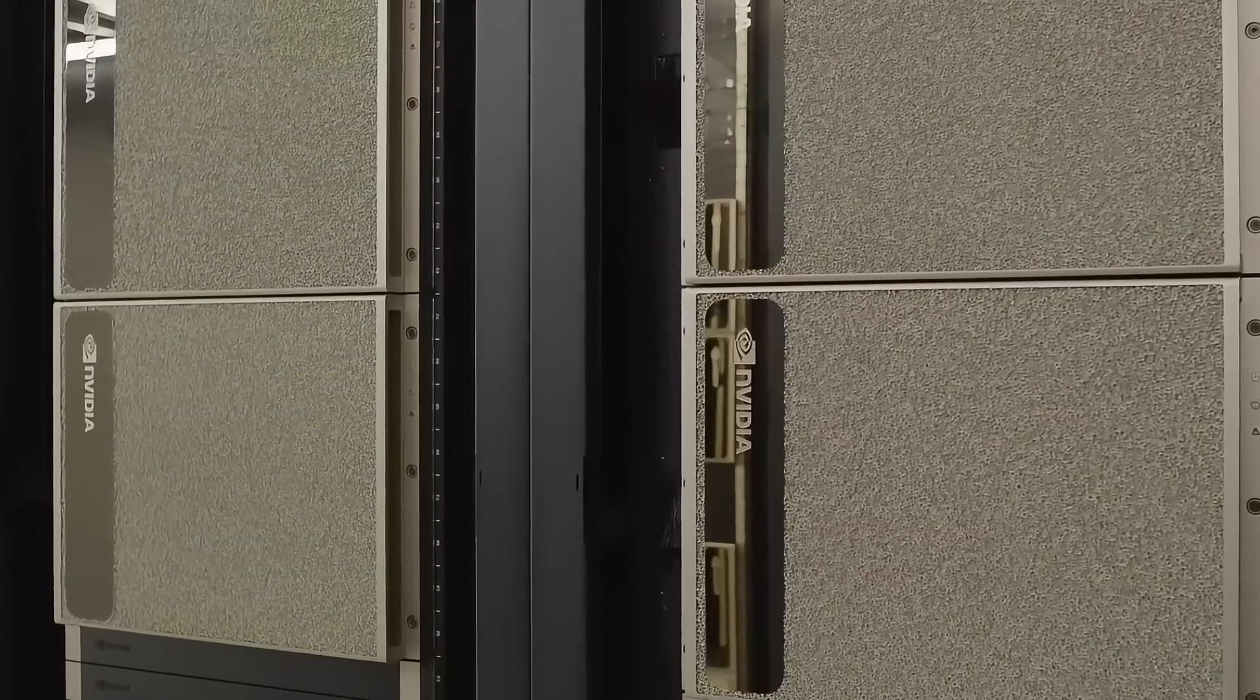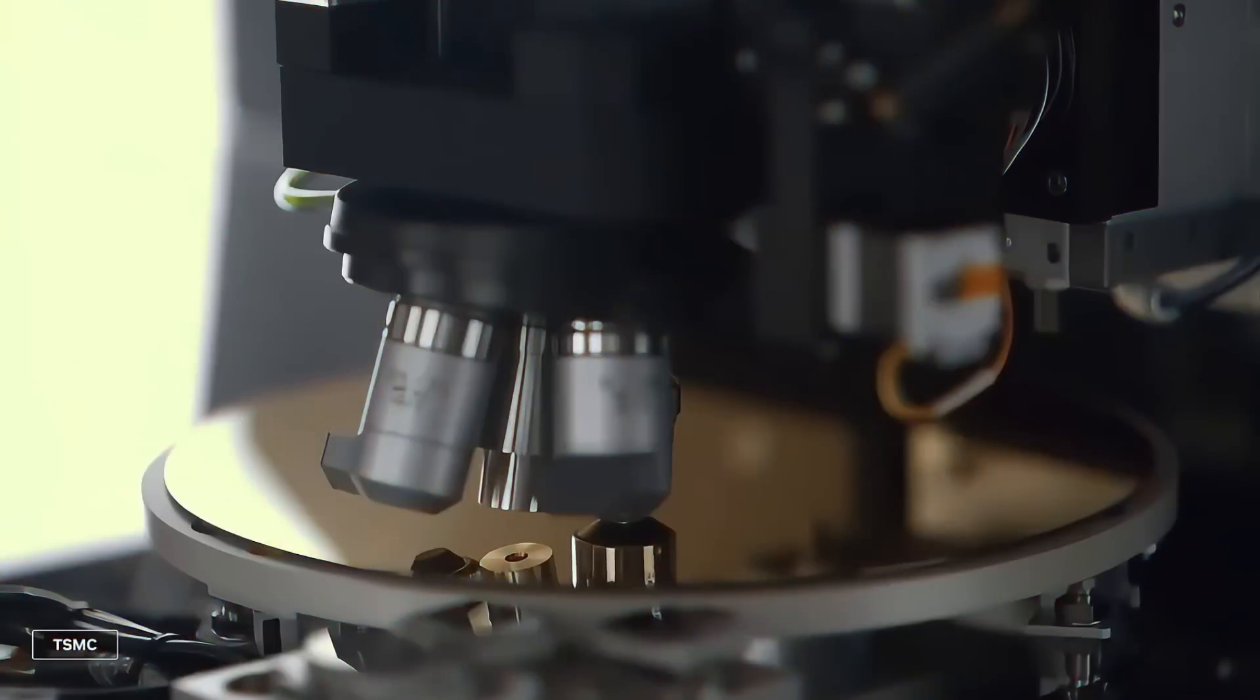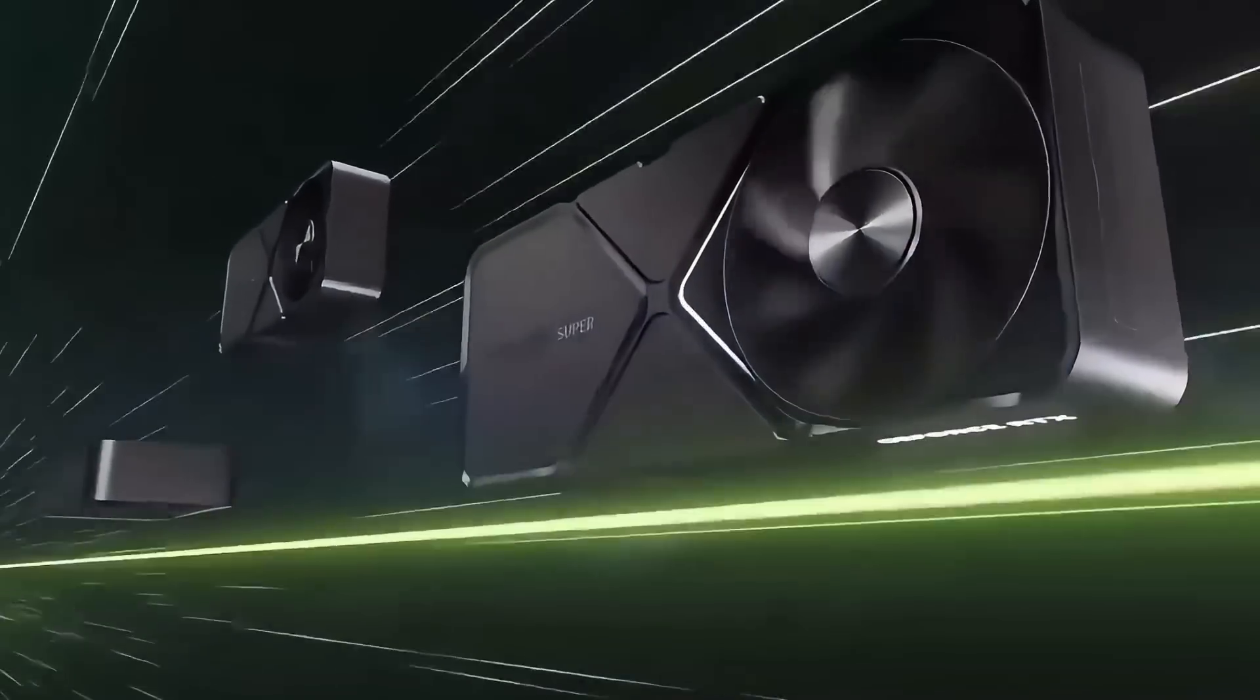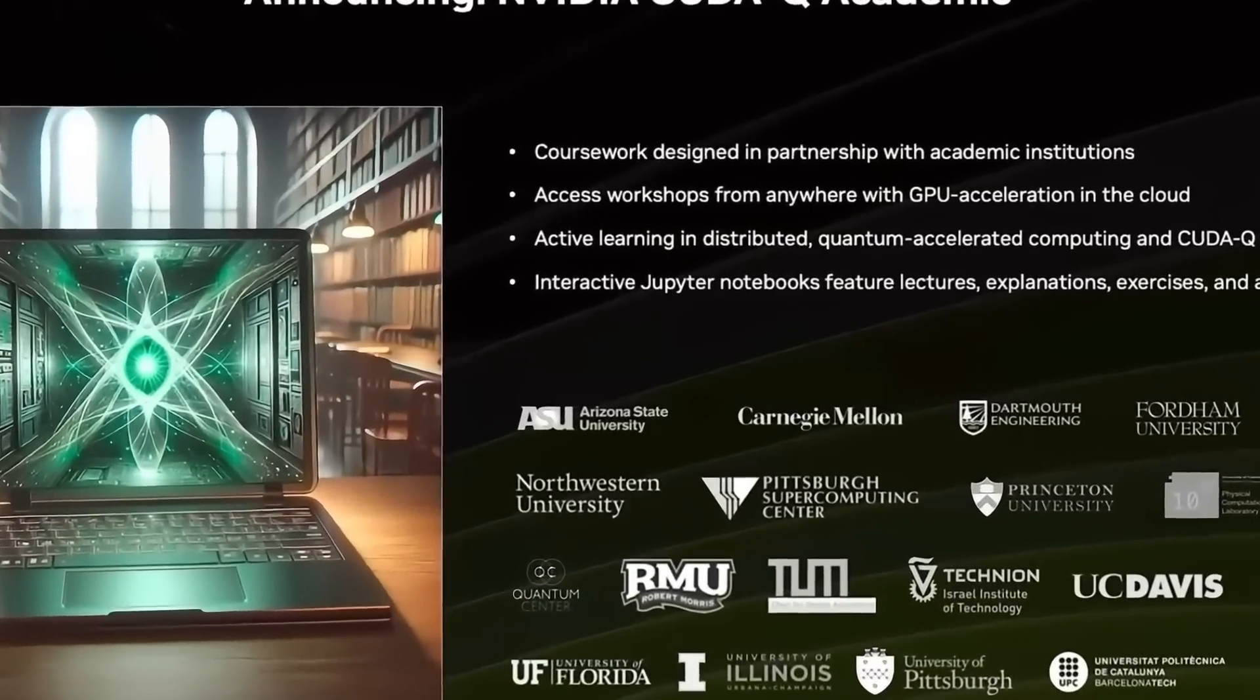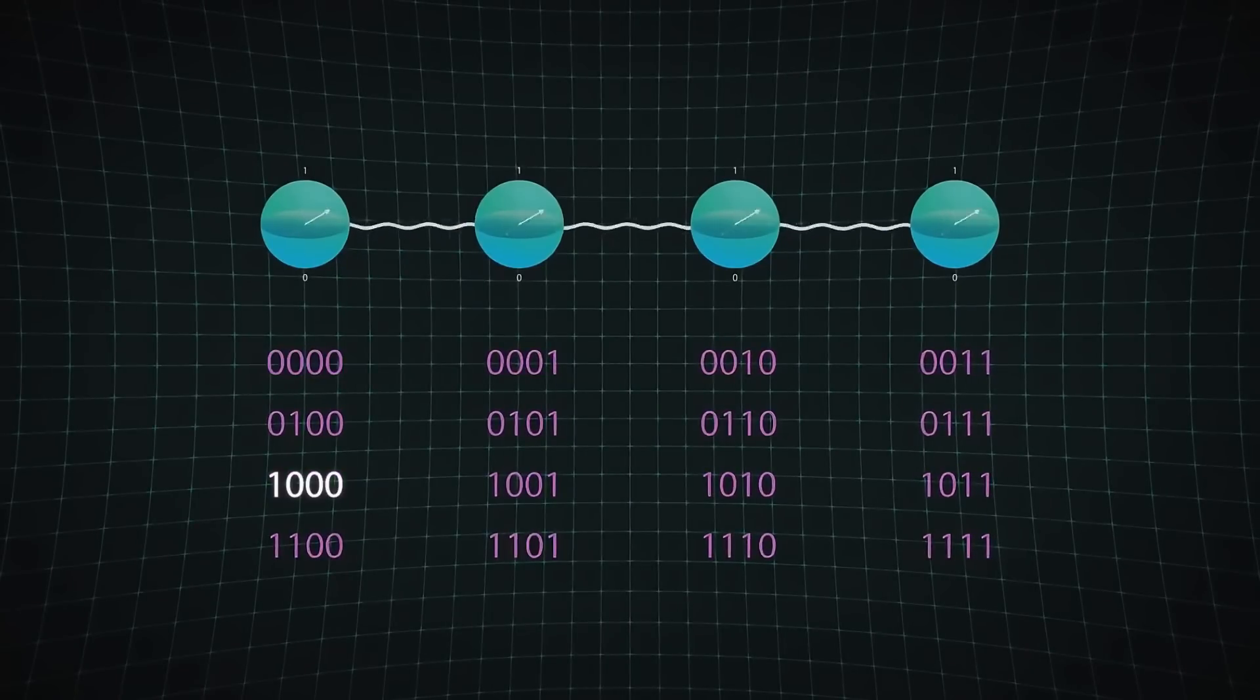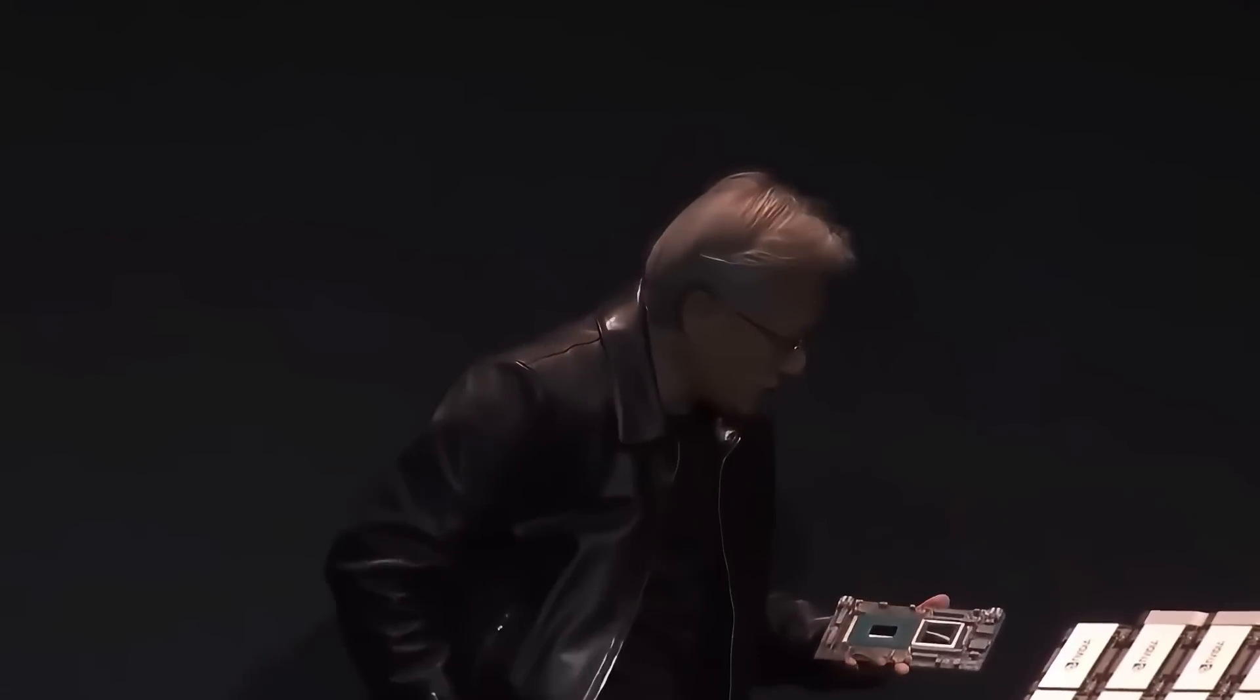Another major advantage is NVIDIA's roadmap towards zeta-scale computing, a computing milestone expected to be reached by 2030. A zeta-scale AI system would be thousands of times more powerful than today's best supercomputers, allowing AI to process and learn at speeds beyond human comprehension. If NVIDIA achieves this first, they could unlock the next level of AI capabilities, putting them ahead of every competitor in the race for AGI.